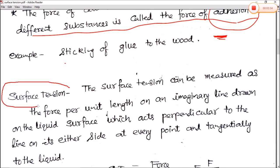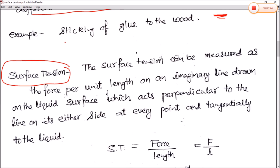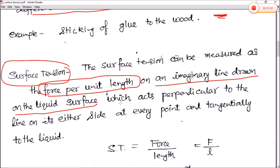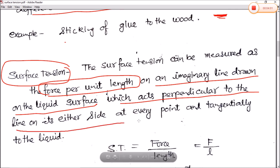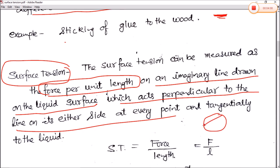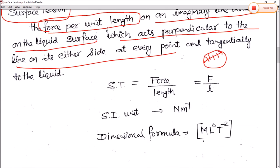Now we define surface tension more precisely. Surface tension can be measured as the force per unit length on an imaginary line drawn on the liquid surface. The force acts perpendicular to the line on either side, and is tangential to the liquid surface. So the simple definition states that surface tension T is equal to force divided by length, that is T = F / L.